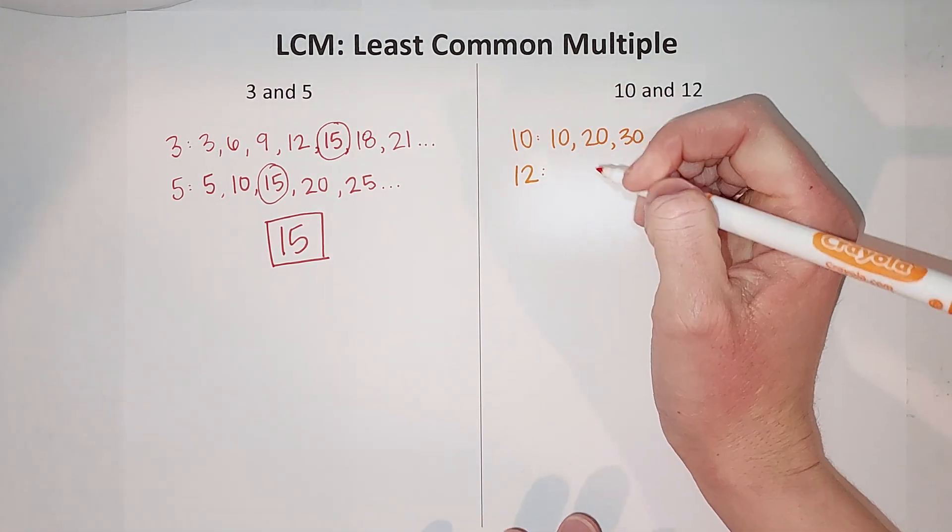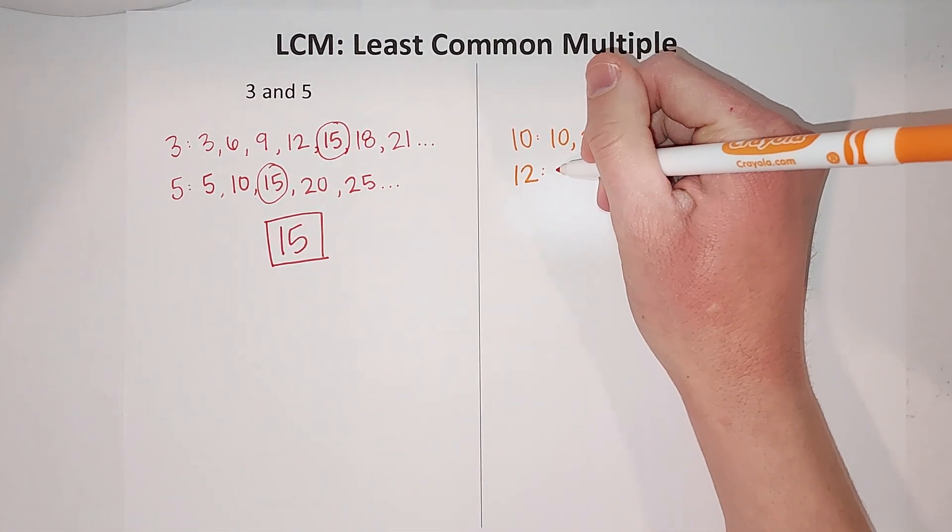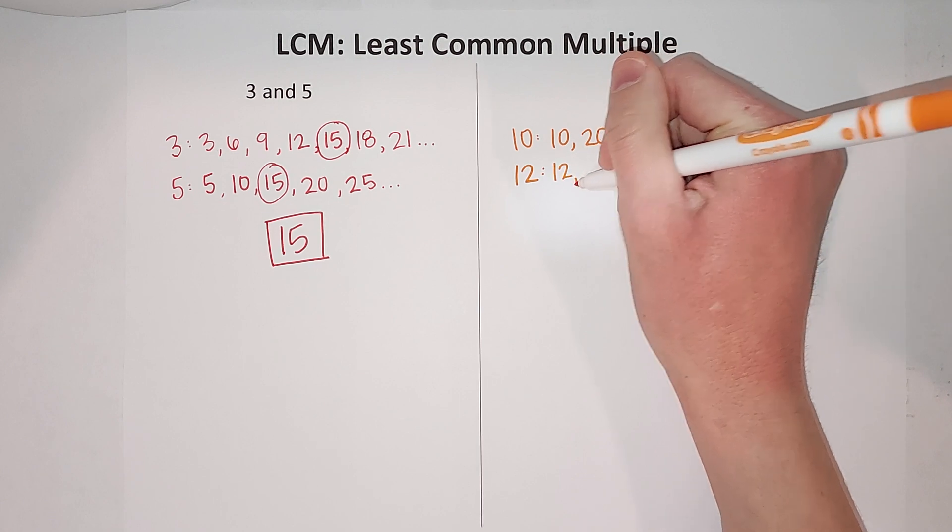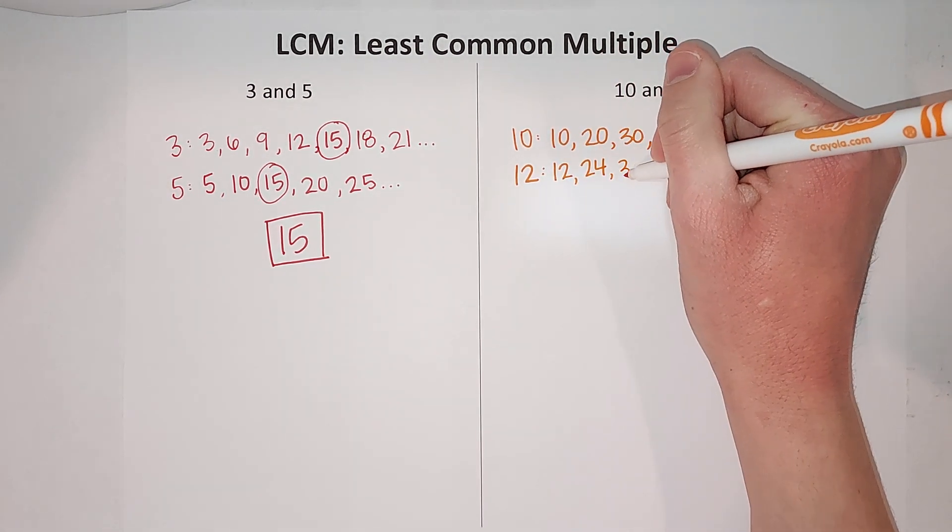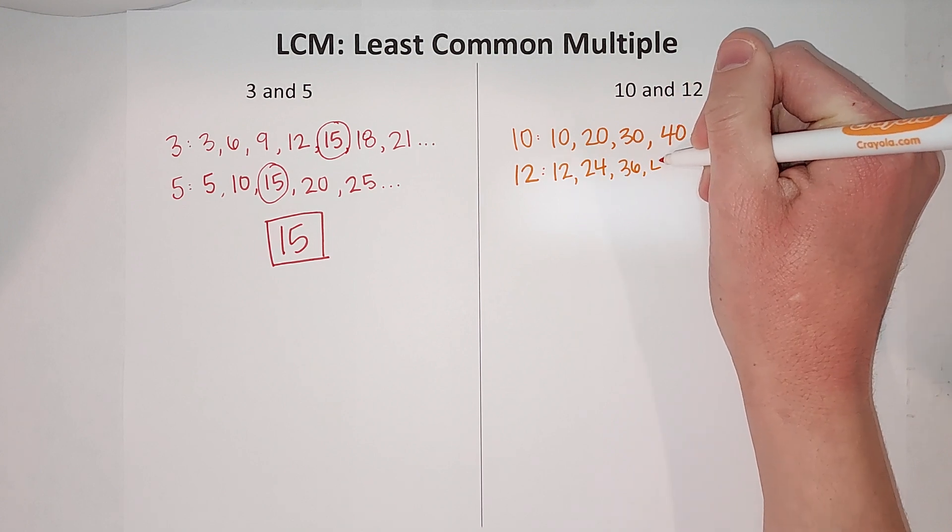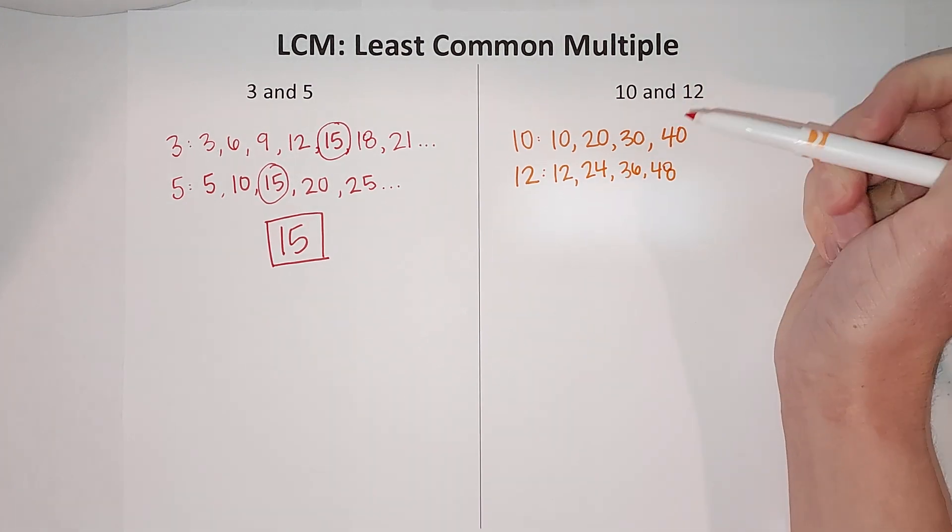These ones maybe you don't know as well, but still we can do it. 12 times 1 is 12, 12 times 2 is 24, 12 times 3 is 36, 12 times 4 is 48. You get the idea, keep going.